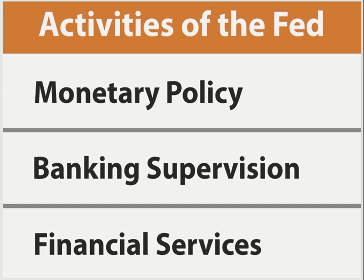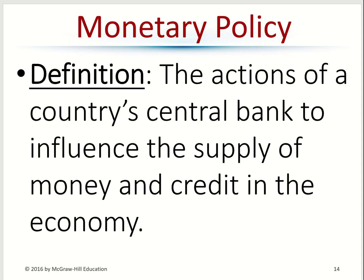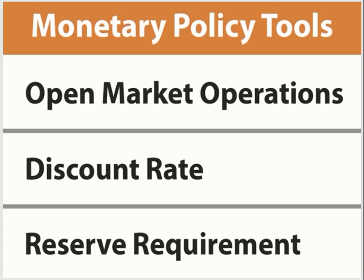The Federal Reserve mainly does three things: monetary policy, banking supervision, and financial services. For monetary policy, by definition, it's the action of a country's central bank to influence the supply of money and credit in the economy. Every economy needs money — if you don't have money, the economy stops running; but if you have too much, you have inflation. There are three tools for monetary policy: open market operations, discount rate, and reserve requirement.